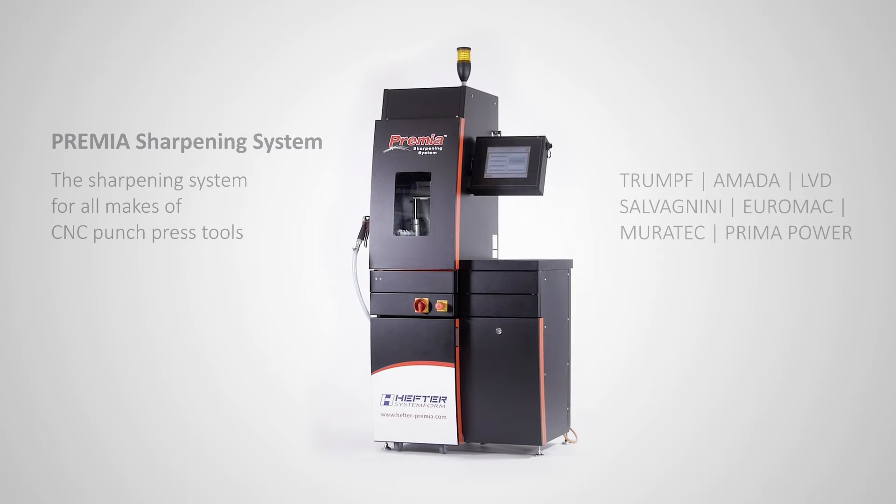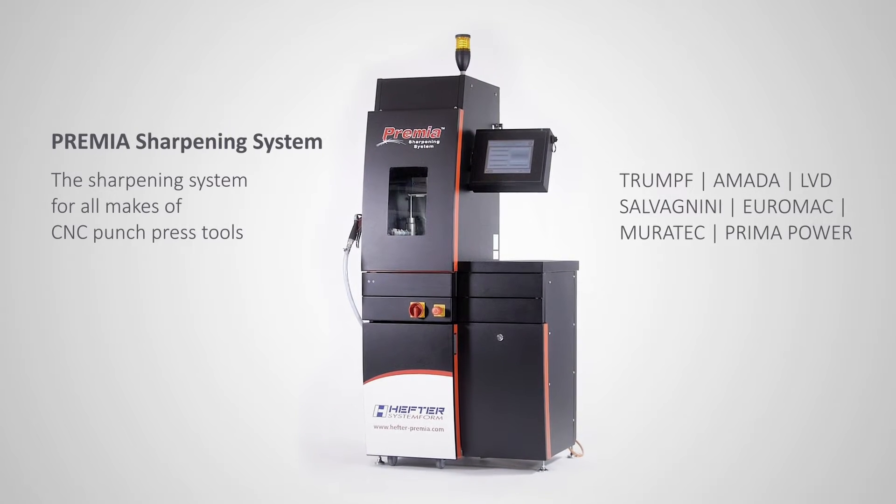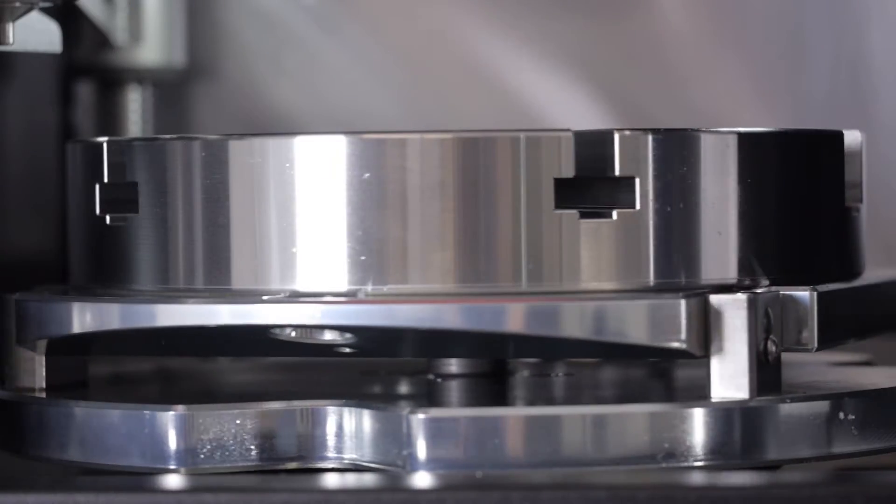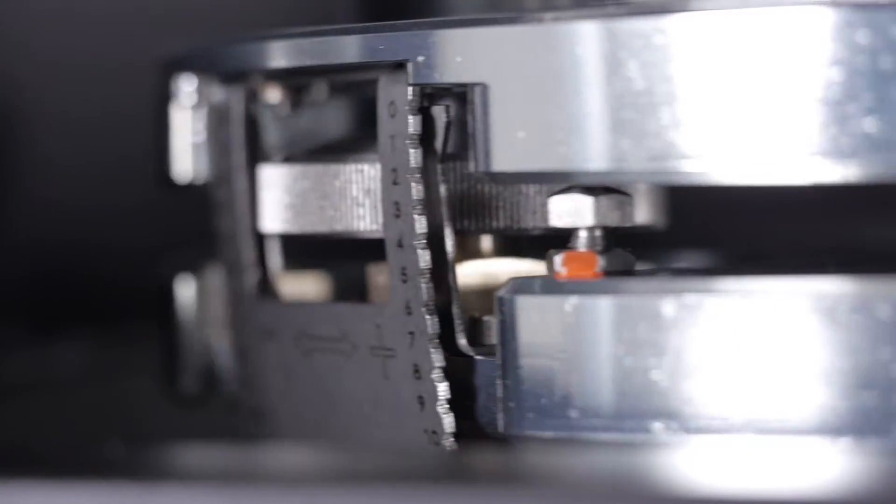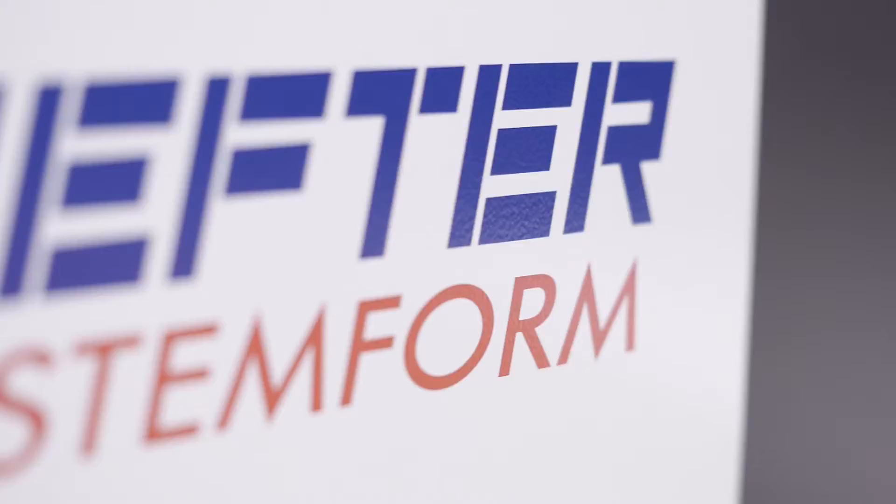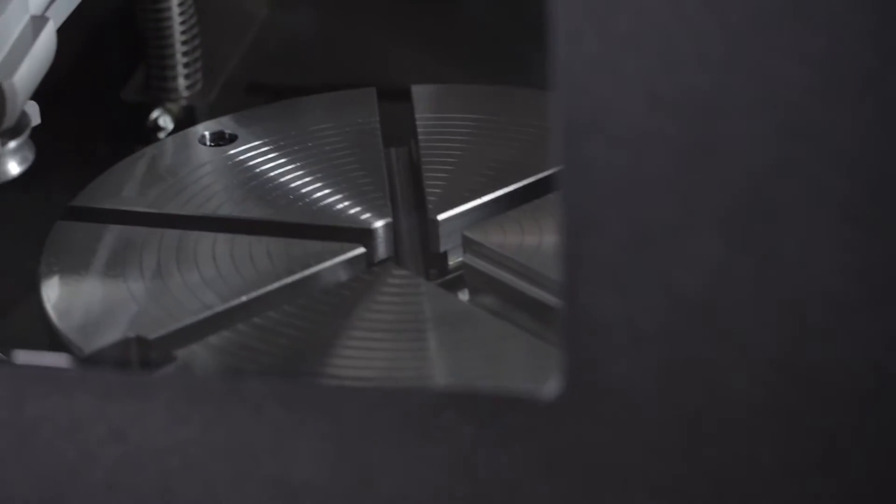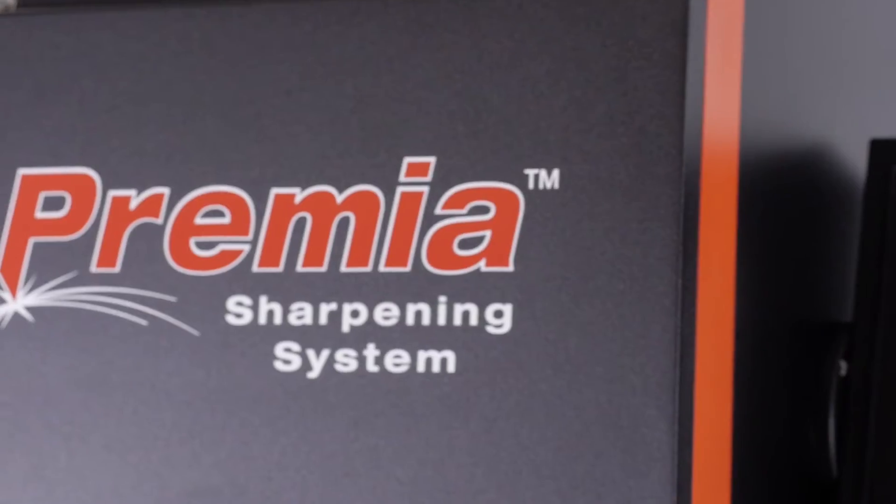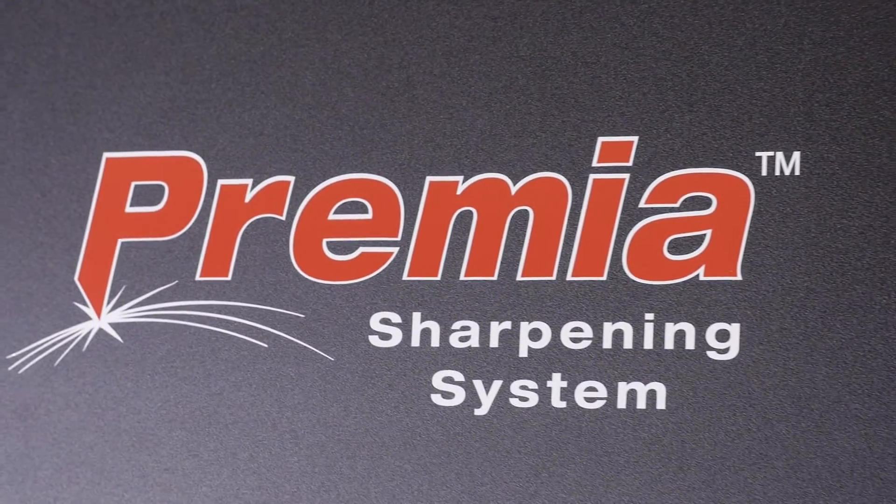Premia sharpening system: the sharpening system for all makes of CNC punch press tools. When producing the highest quality sheet metal parts, tooling maintenance of the punch press tools is extremely important. Only sharp tools allow exact results.